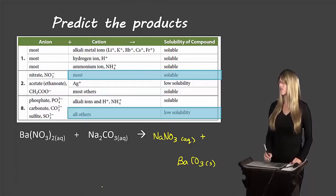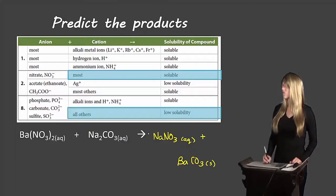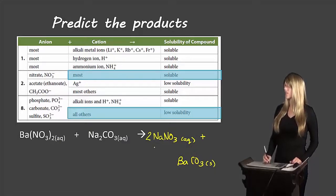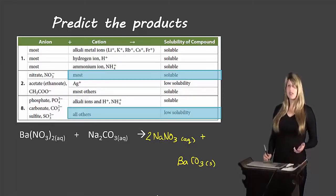To balance this equation: we have one barium on each side. We have two nitrates on the left, so a coefficient of two for sodium nitrate gives us two nitrates on the right. That gives us two sodiums on the right, matching two sodiums on the left. One carbonate on each side. So we're all balanced out.